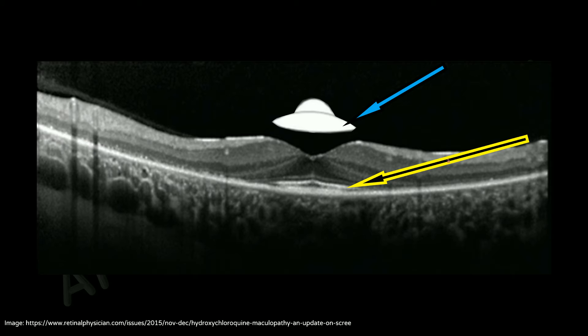The main characteristics of this sign include: loss of the normal foveal depression, parafoveal thinning of the outer nuclear layer, parafoveal loss of the ellipsoid zone, an ovoid appearance of the central fovea, conservation of the foveal zone outer retinal structures and ellipsoid zone, and an apparent posterior displacement of the inner retinal structures towards the retinal pigment epithelium.